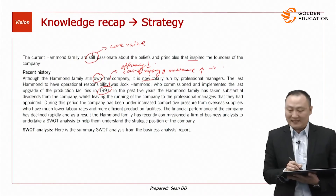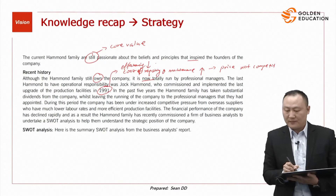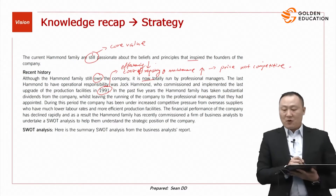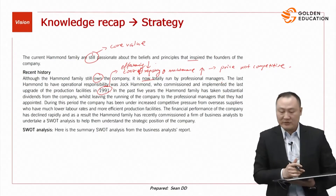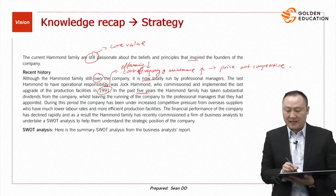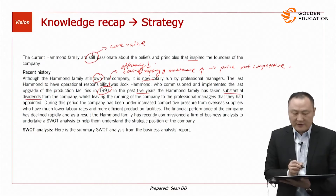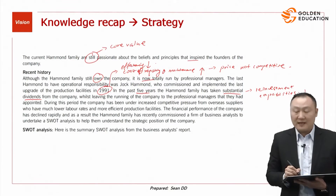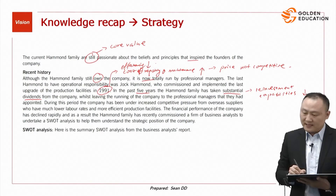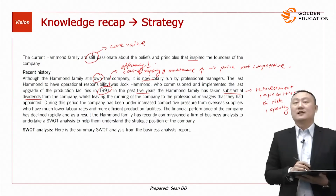Since the last upgrade was in 1991, the efficiency of the machines could be low, and the cost of repairing and maintenance is rather high. If efficiency is low and maintenance costs are high, then your prices may not be competitive. If you want competitive pricing without changing profit, you would need to shrink your profit further. In the past five years, the Harman family has taken substantial dividends, which means reinvestment capability is affected and risk capacity is lower.